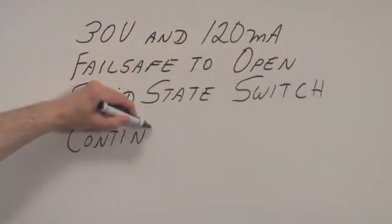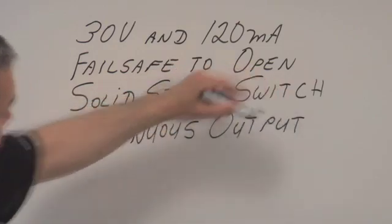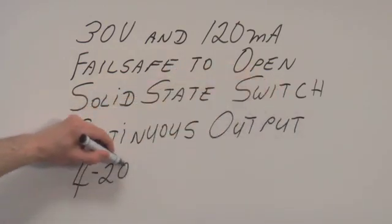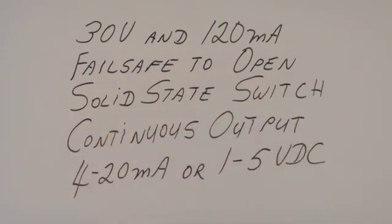In addition to the solid state switch output, the 805QS also provides a supplemental continuous output, either 4-20mA or 1-5V DC. Lastly, the discrete and continuous outputs of the 805QS are independent from each other.